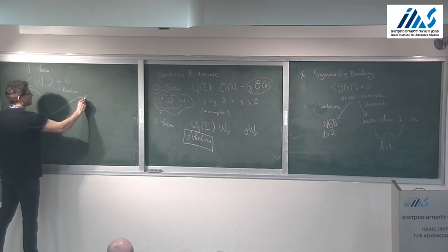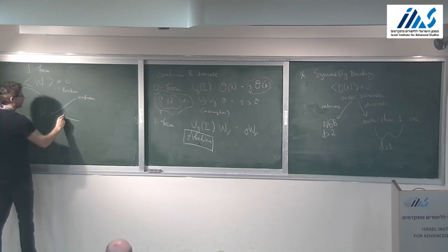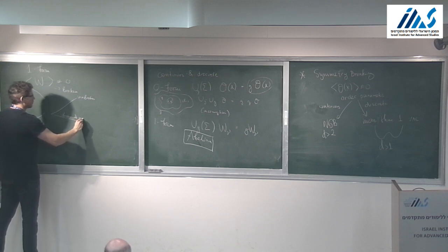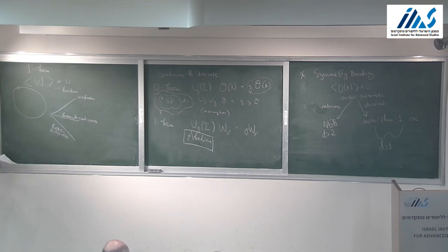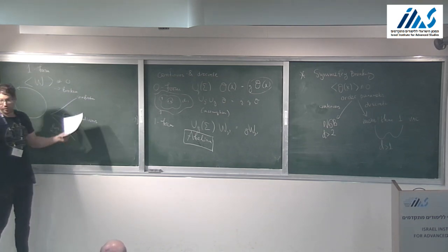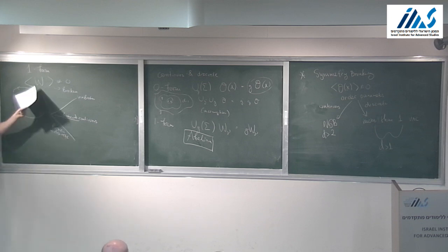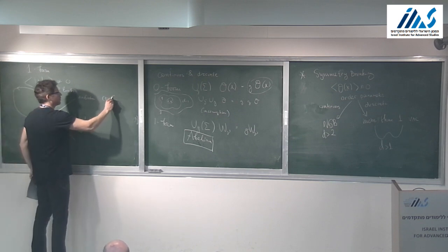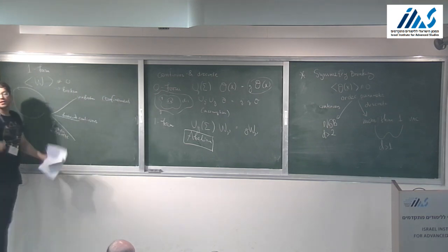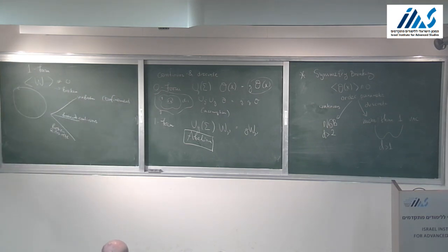There are three situations: unbroken, broken and continuous, and broken and discrete. When a one-form symmetry is unbroken, Wilson lines with large area have zero expectation value — this is called confinement. The objects living on the line are confined. Confinement happens in theories which have a one-form symmetry that is unbroken. Exponential decay with area means confinement; exponential decay with perimeter means spontaneous breaking.